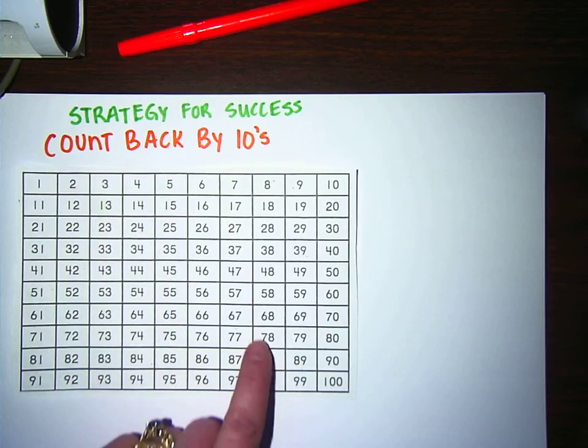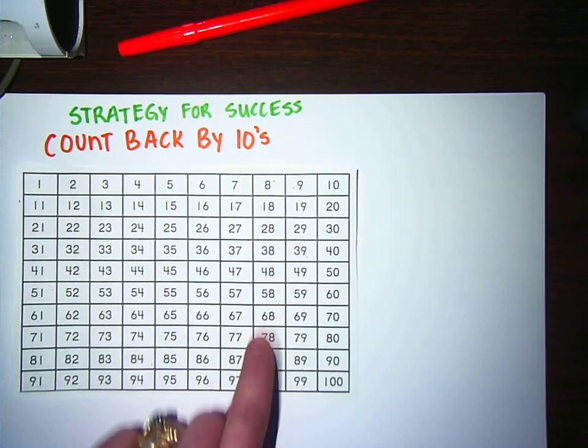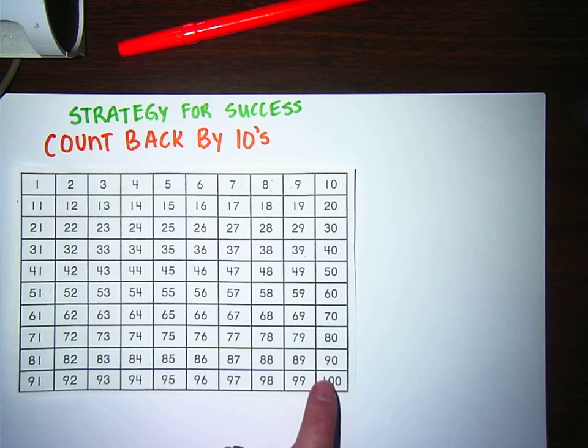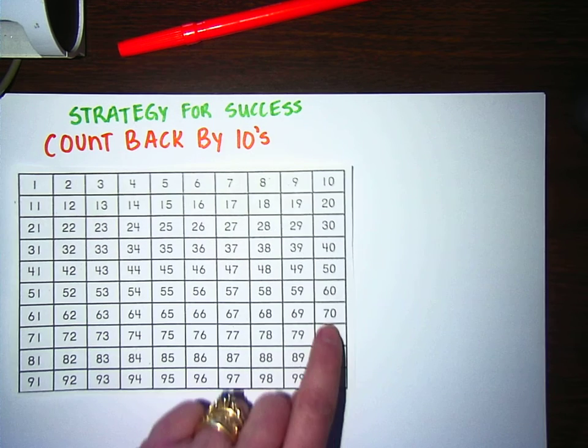If I want to count back by tens from 78, I go up on the hundreds chart. If I want to count backwards by tens from 100, I go up on the hundreds chart.